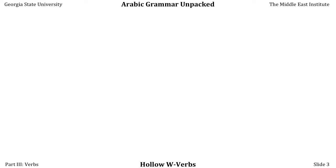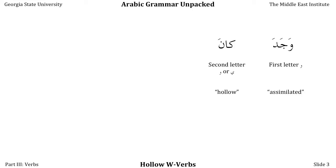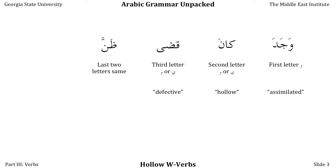We've already discussed other types of irregular verbs. Those whose first letter is the letter WAU are called assimilated verbs. Those whose middle letter is a vowel are called hollow verbs. Those whose final letter is a vowel are called defective verbs. Those whose second and third root letters are the same are called doubled verbs. And those whose first or any letter is Hamza are called Hamzated verbs.